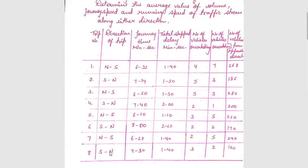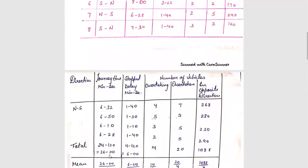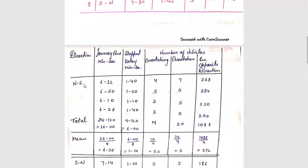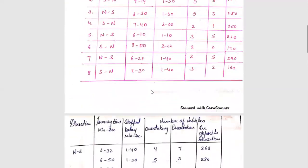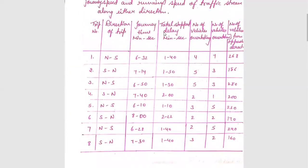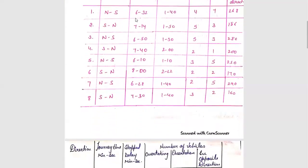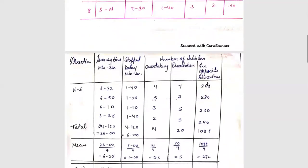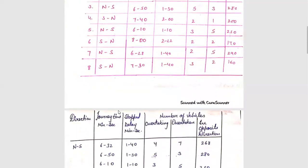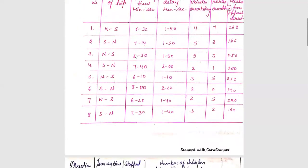In the previous session we covered the data collected from the floating car method. Now for the north-to-south data, I will write down the journey time, total stop delay, number of vehicles overtaking, number of vehicles overtaken, and opposite direction counts. For the first north-to-south trip: 6 minutes 32 seconds journey time, 1 minute 40 seconds stop delay, 4 overtaking, 7 overtaken, and 268 vehicles from the opposite direction. I have written all three north-to-south entries in the table.